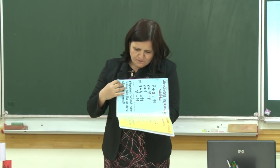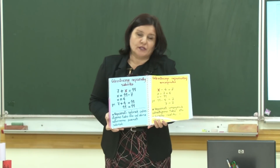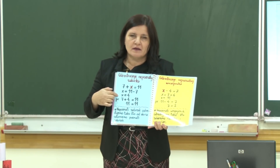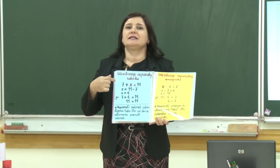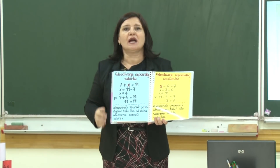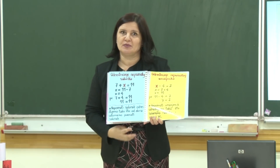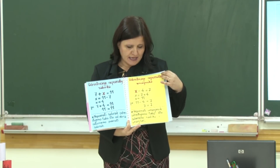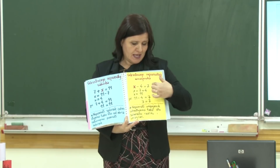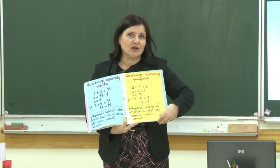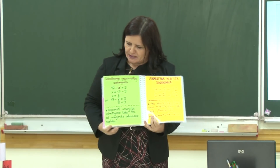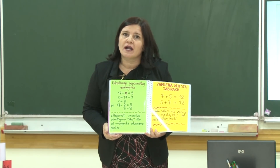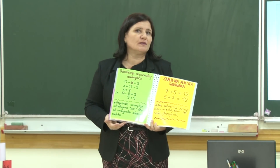Potom slijedi izračunavanje, određivanje nepoznatog sabirka. Nepoznati sabirak izračunavamo tako što od zbira oduzmemo poznati sabirak. Potom idemo na određivanje nepoznatog umanjenika. Kako određujemo nepoznati umanjenik? Tako što razliku saberemo sa umanjocem. Radili smo i određivanje nepoznatog umanjoca — nepoznati umanjilac dobijamo tako kada od umanjenika oduzmemo razliku.